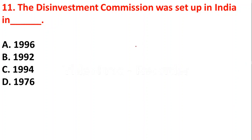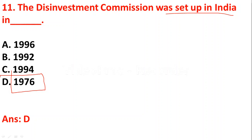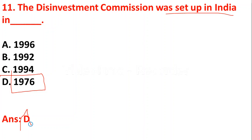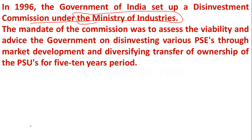Question eleven: the Disinvestment Commission was set up in India in option A: 1996, option B: 1992, option C: 1994, option D: 1976. The correct answer is option A — 1996. In 1996, the Government of India set up the Disinvestment Commission under the Ministry of Industry. Its mandate was to assess viability and advise the government on disinvesting various public sector enterprises through market development and diversifying transfer of ownership of PSUs for 5 to 10 years.